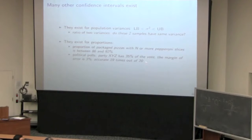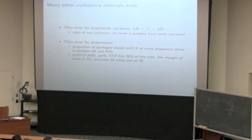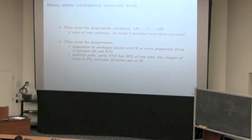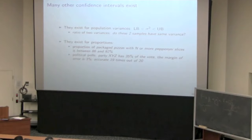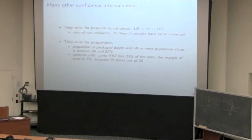That '19 times out of 20' is simply an expression of the confidence level — it's telling you that's 95% confidence. The pollster sampled, say, 1,000 people, and 35% said they'd vote for party X or Y or Z. The margin of error of 3% represents essentially the standard deviation in the confidence interval. The '19 times out of 20' is the confidence level itself — so 95%.